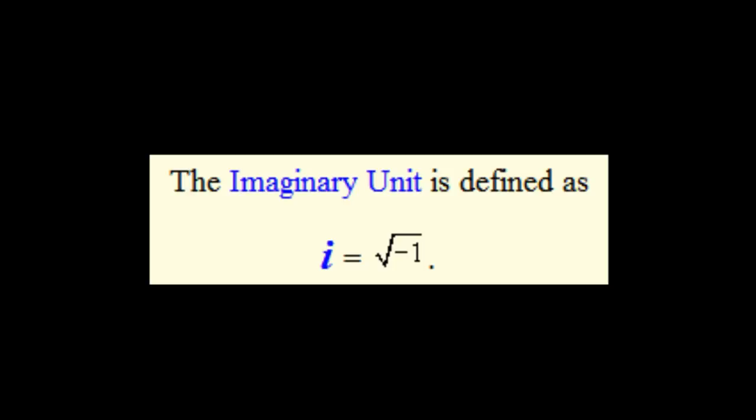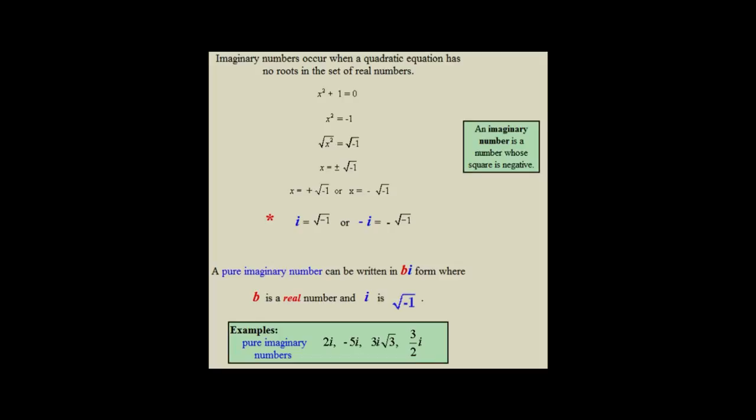The imaginary unit is defined as i equals radical negative 1. Imaginary numbers are used when a quadratic equation has no real numbers as its roots. As shown here, pure imaginary numbers are written in the form of bi, where i is of course equal to radical negative 1, and b is a real number.